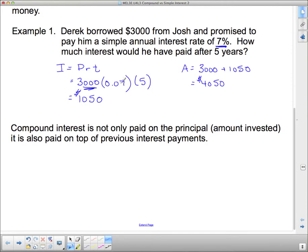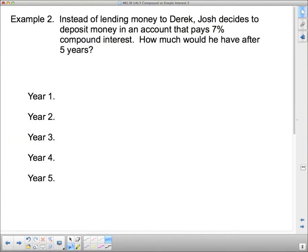So you don't just get one lump sum here. After 5 years, Derek had to give Josh this $1,000. Compound interest is paid on a regular basis. And then it's added on top of things. So here, instead of lending money to Derek, Josh decides to deposit the money in an account that pays 7% compound interest. How much would he have after 5 years?